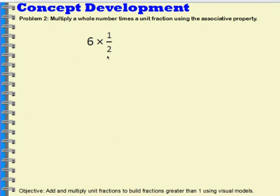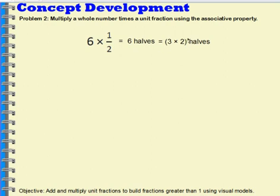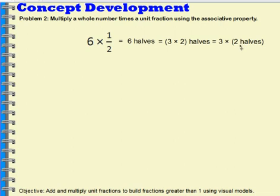Let's extend this thinking into unit form. 6 times 1 half is equal to saying I have 6 halves. One way I can express 6 is by saying 3 times 2. So 6 halves would be equal to 3 times 2 halves. And if I use the associative property and move my parentheses, I can think of my 2 halves first — 2 halves make 1 whole — giving me 3 times 1 whole. Expressed with numbers: 3 times 2 halves equals 3 times 1 whole, which equals 3.